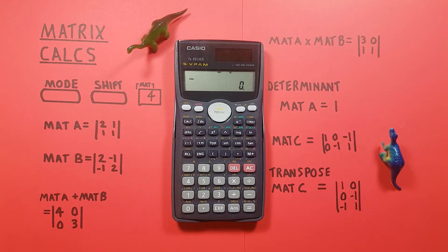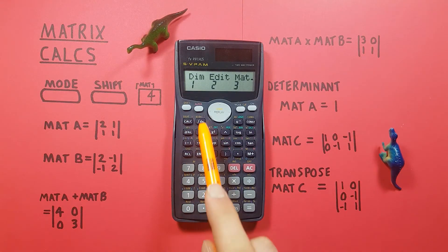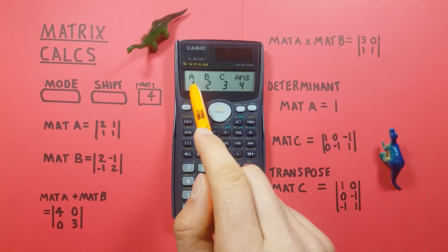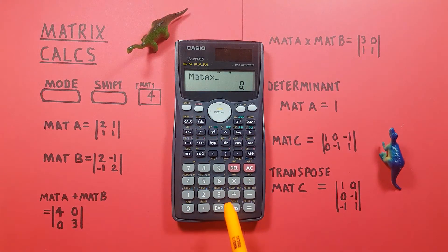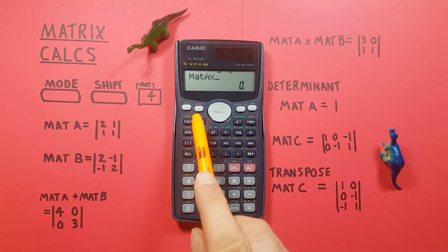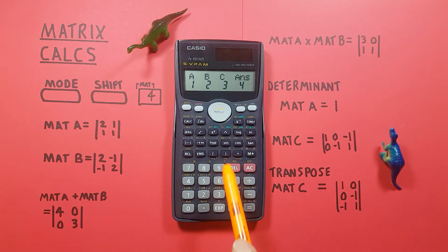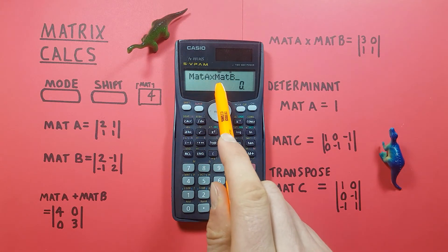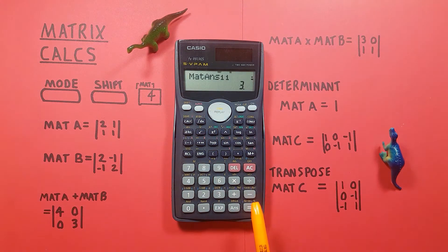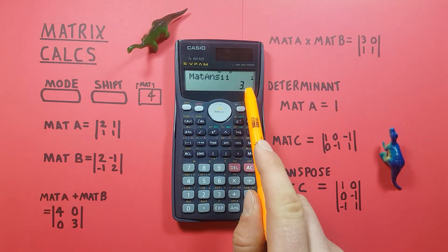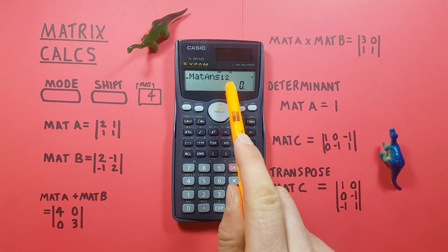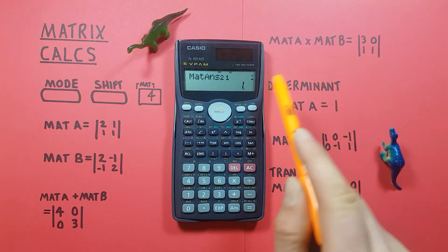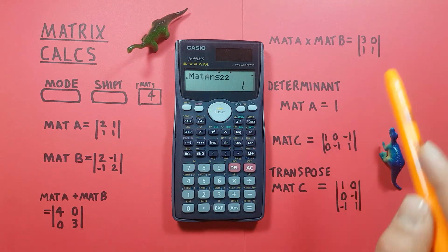In the same way we can multiply matrices. Press shift+mat, select matrix A, hit the multiplication key, then select matrix B, and press equals. The result of matrix A times matrix B is: row 1 column 1 = 3, row 1 column 2 = 0, row 2 column 1 = 1, and row 2 column 2 = 1.